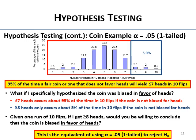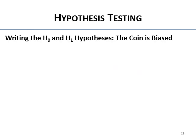Hopefully this works as a metaphor. We reject the null when we get something really unlikely to happen by chance if the null hypothesis is true. The null here is that the coin is not biased — it's okay.